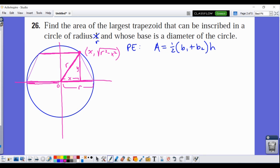So my area formula is going to be 1/2 times (2r + 2x), right? Because there's an x, there's an x, and there's an x. And then my height is just the square root of r² - x². I'm going to write it this way, (r² - x²)^(1/2).